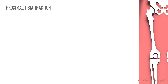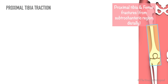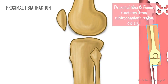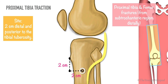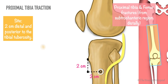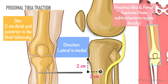The indications for proximal tibia traction include fractures of the tibia and femoral fractures from the sub-trochanteric region distally. The pin entry site is marked 2 centimeters distal and 2 centimeters posterior to the tibial tuberosity, to avoid injury to the common peroneal nerve as it courses anteriorly after winding around the fibular neck. The pin is passed in a lateral to medial direction to avoid damage to the common peroneal nerve.